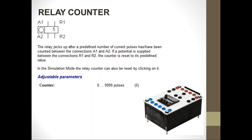The relay counter, unlike the timer, does not provide time delay — it counts. The function of the relay counter is to count the number of pulses that the coil receives. The term 'pulses' is related to turning on and off, meaning the relay counter counts the number of times the coil has been turned on and off.